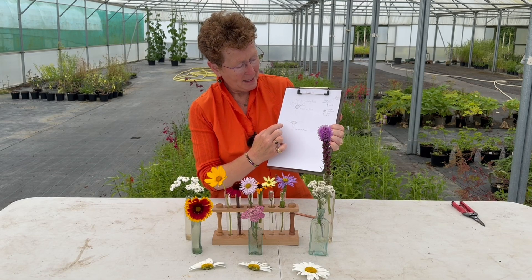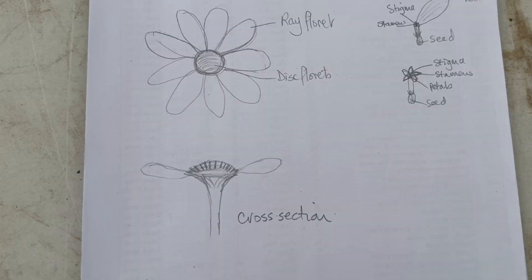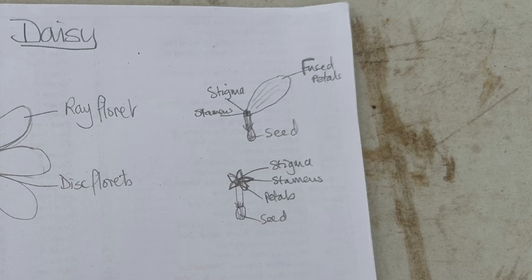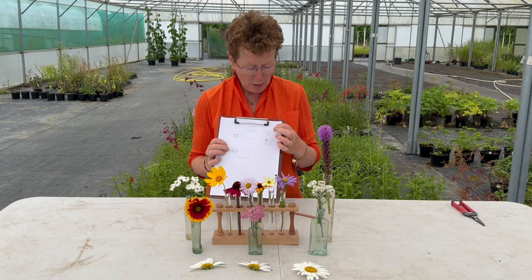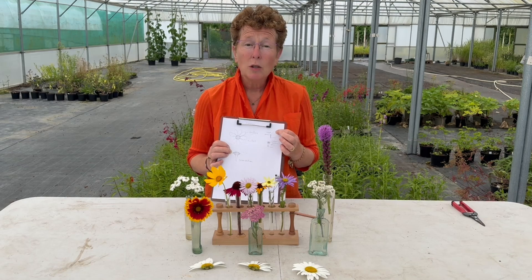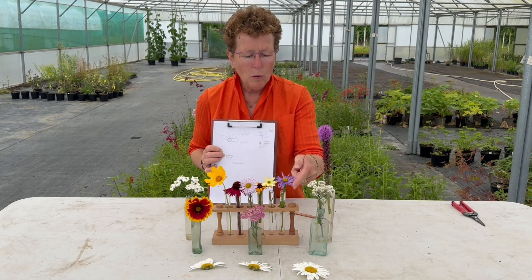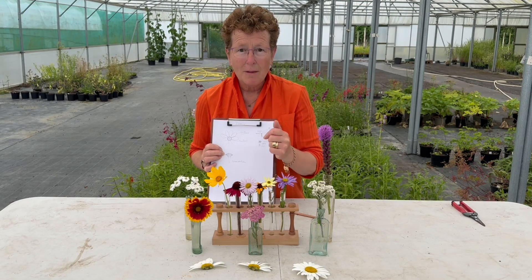Basically, all that you see on this flower — looking like one flower — is actually multiple flowers within there. When you cut a daisy in half, you get these petals at the side and all the yellow in the middle. The ones which have got the petal on are actually an individual flower in their own right, with their own stigma, their own stamens, and they can produce their own seed.